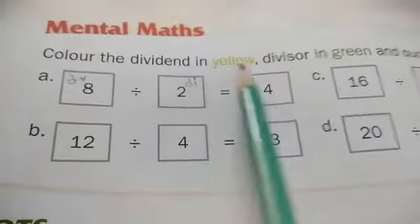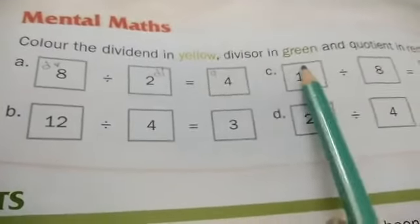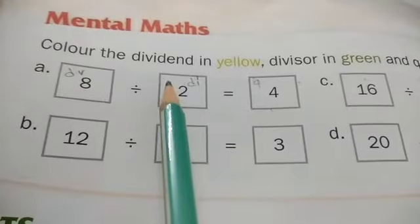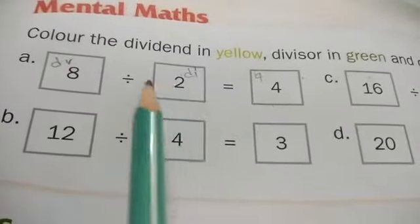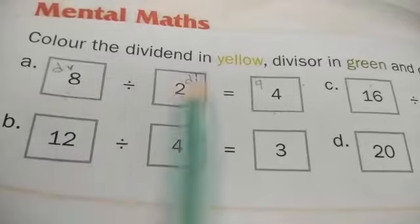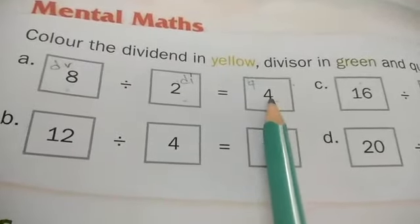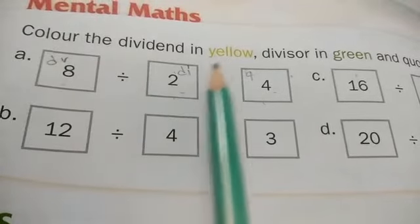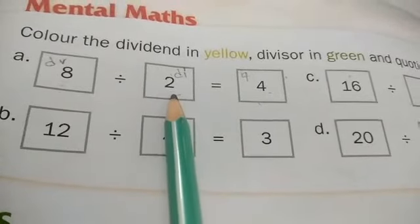Next, colour the dividend in yellow, the divisor in green, and the quotient in red. Ok children, you have to use 3 colours — yellow, green, red. This is the dividend, this is the divisor, this is the quotient. Dividend in yellow, divisor in green, quotient in red. Like this, you have to complete all of these.